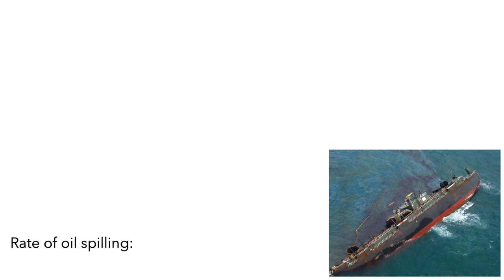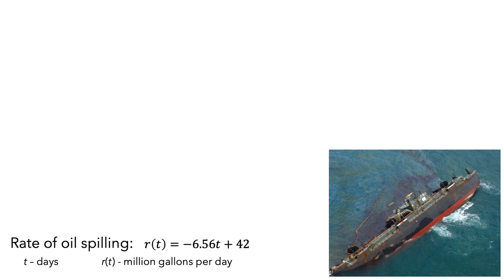A model for the rate of oil leakage is the formula R(T) = -6.56T + 42, where T is measured in days and R(T) is in millions of gallons per day. Cleanup crews began mobilizing resources to contain the spill, but it took them approximately 24 hours to start moving in their equipment. They wanted to know how much oil would spill out of the tanker in that first 24 hours, so they could predict how much area the spill might cover when they begin their work.